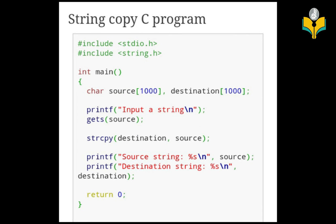The next program is string copy — strcpy. We include stdio.h and string.h. In the main function, we declare two character arrays: source of size 1000 and destination of size 1000. These are the two arrays we will use — one to hold the original string and one to receive the copied string.